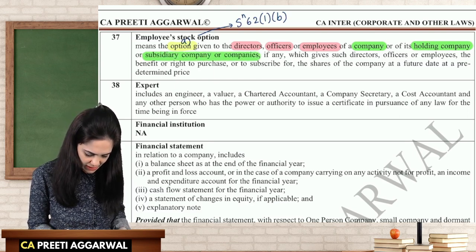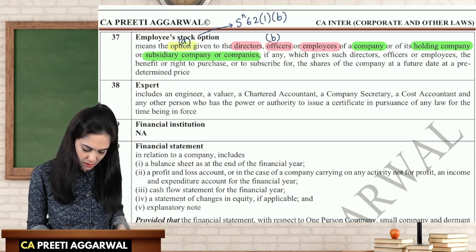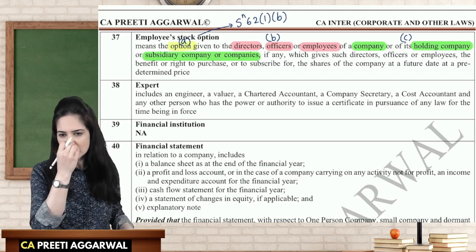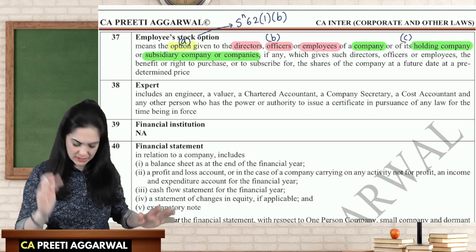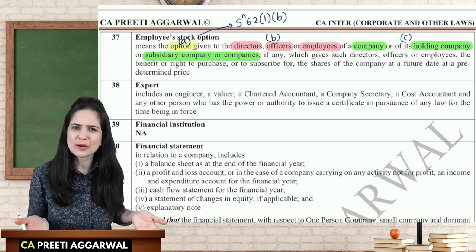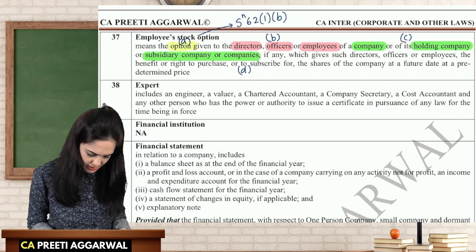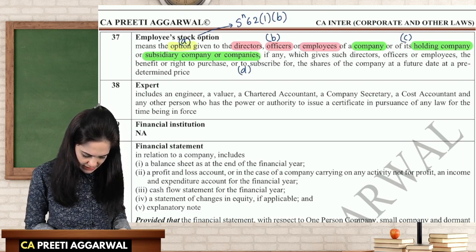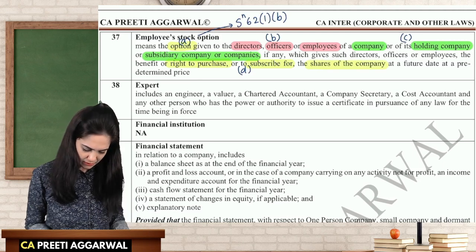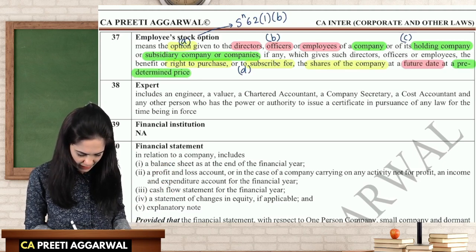The second keyword is: to whom is this option given? It may be of the company, the holding company, or subsidiary company. The option itself is a right to purchase or subscribe for shares of the company at a future date at a predetermined price.